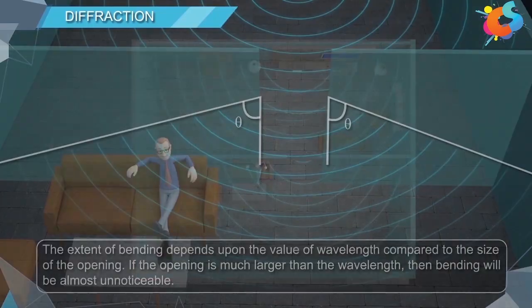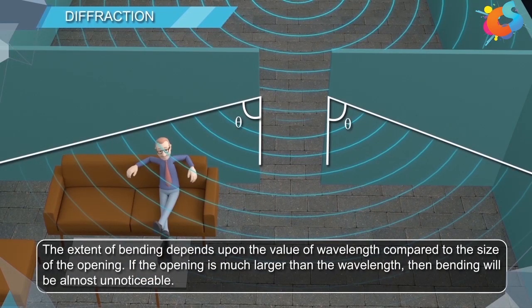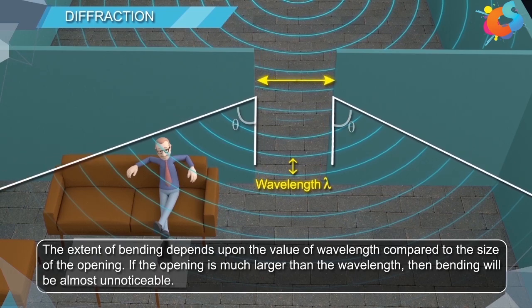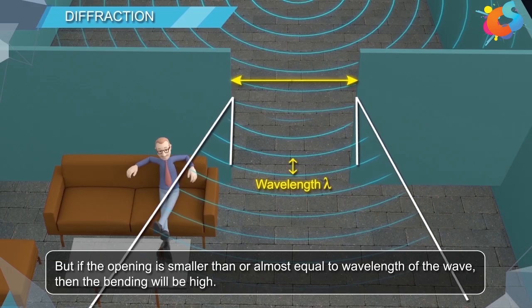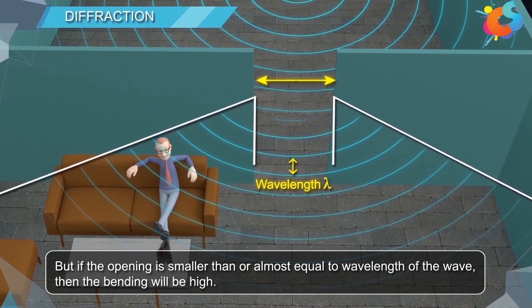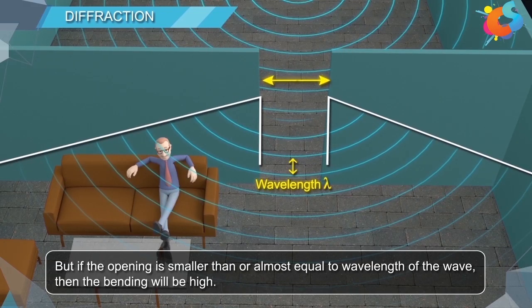The extent of bending depends upon the value of wavelength compared to the size of the opening. If the opening is much larger than the wavelength, then the bending will be almost unnoticeable. But if the opening is smaller than or almost equal to the wavelength of the wave, then the bending will be high.